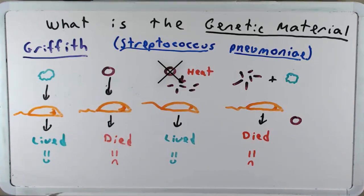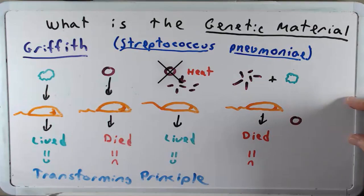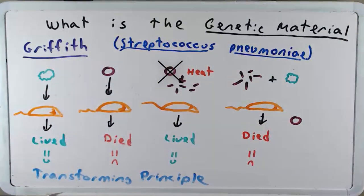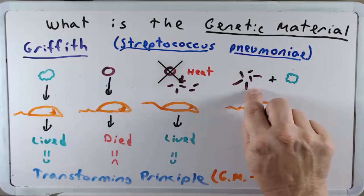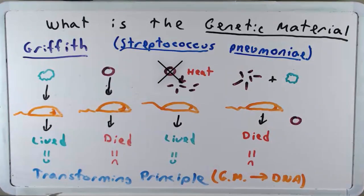Well he concluded that there was a transforming principle. Remember he didn't call it the genetic material. I don't know for sure, but I'm not convinced he was really all that concerned about the genetic material because he was more interested in how this bacterium killed its host. So he called it the transforming principle. We later would call that the genetic material. And still later it would be shown that that genetic material was DNA. He didn't know that at the time. But he reasoned that there was something left behind from this smooth bacterium that could be incorporated into the rough bacterium to transform it into a smooth bacterium to kill the mouse.